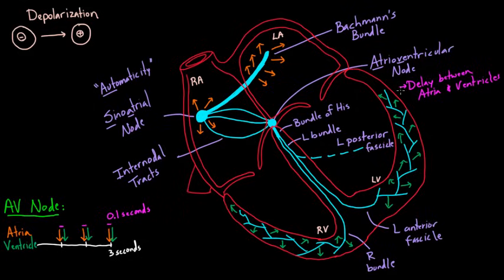So this is how the electrical signal moves from the SA node all the way through the electrical conduction system, so that the atria are beating together, then goes into the AV node where there's a little delay, and then down into the ventricles, where the ventricles are going to beat together.